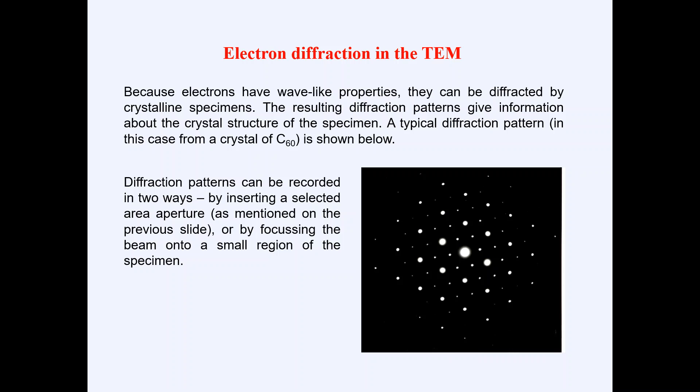Diffraction patterns can be recorded in two ways in TEM. The first is by inserting a selected area aperture, as mentioned in the previous lecture. The second is by focusing the beam onto a small region of the specimen. So there are two main techniques for getting diffraction patterns in TEM: one is inserting a selected area aperture, and the second is focusing the beam onto a small region of the specimen. Both techniques will be discussed in this lecture.